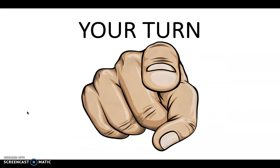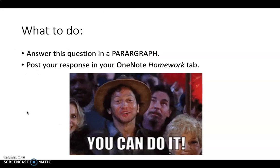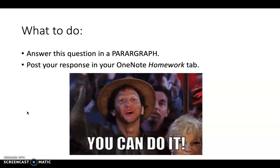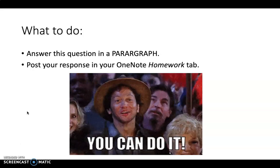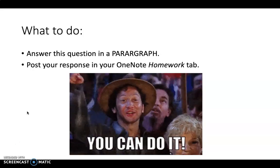Now it's your turn. You're going to look at this artwork by another artist called Paul Gauguin, and the question is: How has Paul Gauguin used the elements of design in the painting Day of God? This is going to be a paragraph-long response, very similar to what you just did with Van Gogh. Look at the artwork, identify the main elements of design — you can choose three or four — and answer this question using a paragraph. Break it down into a topic sentence, explain your topic sentence using evidence from the artwork, and then link it back to the question.